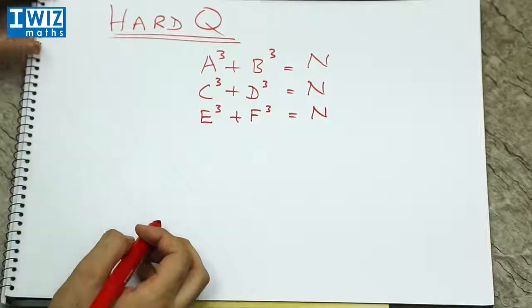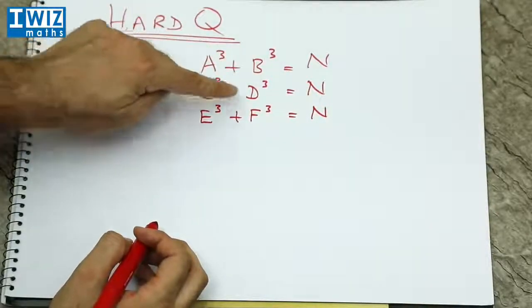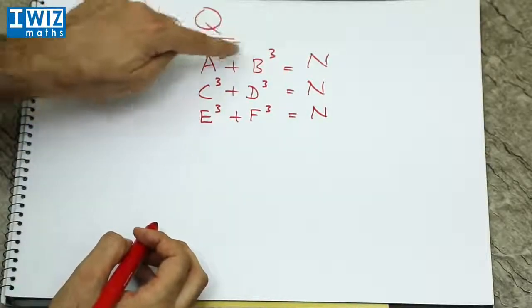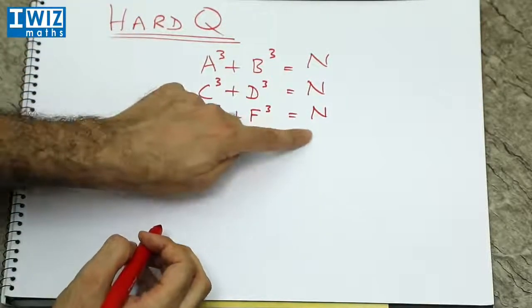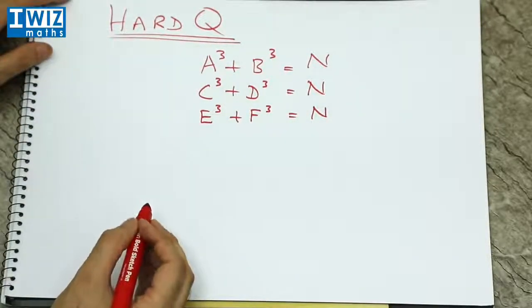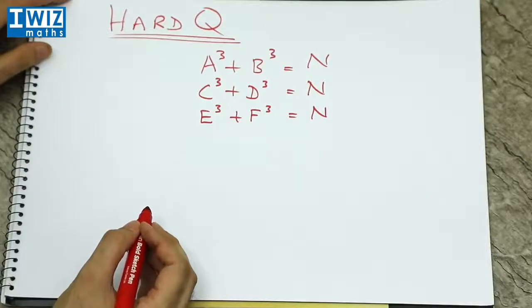So what you need to do is you need to find a, b, c, d, e, and f such that when you cube them and add them up in the following way, you get the same number n. Now, if you really want to be brave, you can go ahead and try it, but if you just want to know the solution, then keep watching.